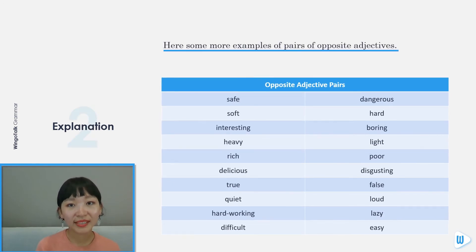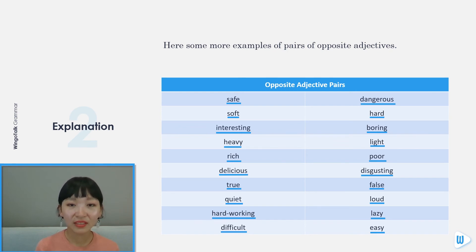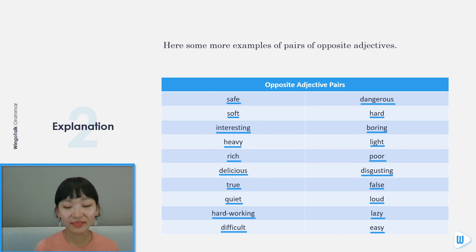Here are some more examples of pairs of opposite adjectives: safe or dangerous, soft or hard, interesting or boring, heavy or light.